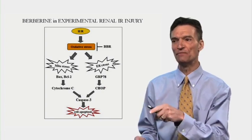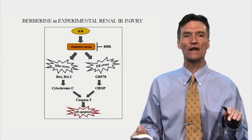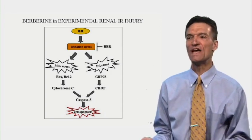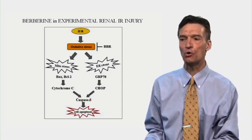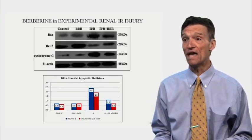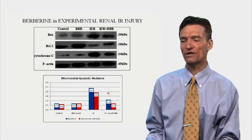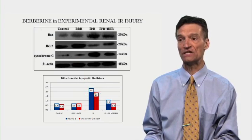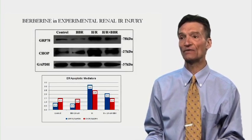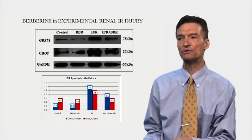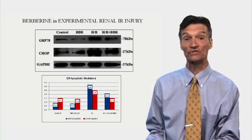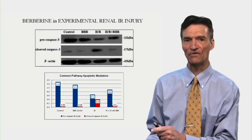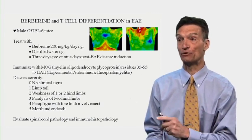The endoplasmic reticulum is a scaffolding region in the cell where a lot of enzymatic activity occurs. In response to oxidative stress, we have the unfolded protein response, and certain molecules are activated that also activate the executioner enzyme systems. The Bax-to-Bcl ratio rises, we release cytochrome C into the cell fluid — this is blunted with berberine. The endoplasmic reticulum apoptotic pathway is upregulated in response to hypoxia-reoxygenation, and this is blunted with berberine. The executioner enzymes are activated by this hypoxic-reoxygenation stress — this is blunted with berberine.